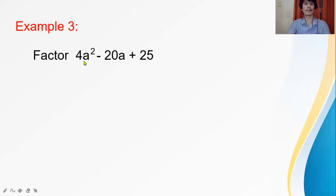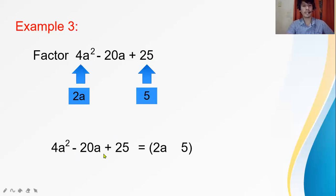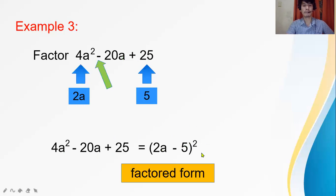Next: factor 4a squared minus 20a plus 25. The first and last terms are both perfect squares. The square root of 4a squared is 2a, and the square root of 25 is 5. Copy the sign of the middle term, which is negative. Then square the binomial. Therefore, the factored form is (2a minus 5) squared.